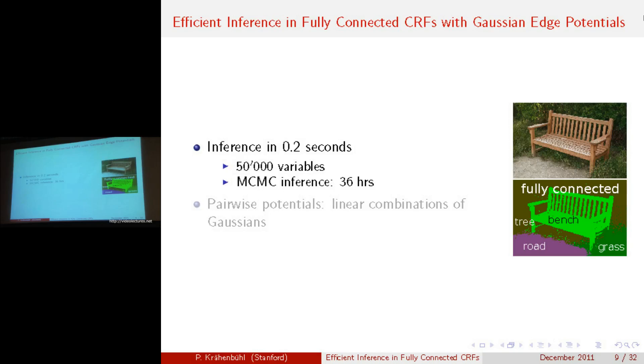The only restriction we have to our model is that the pairwise potential needs to be a linear combination of Gaussian kernels. What I mean with that is that we take our fully connected model, and the pairwise potential in this fully connected model is a product of a label compatibility function mu and a weighted sum of Gaussian kernels, where the Gaussian kernels can have an arbitrary shape and they can be formulated over an arbitrary feature space.